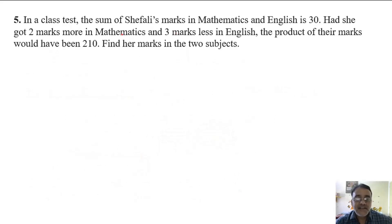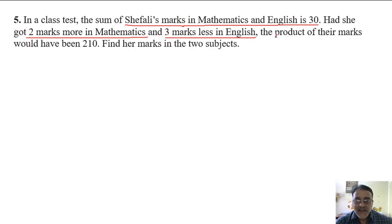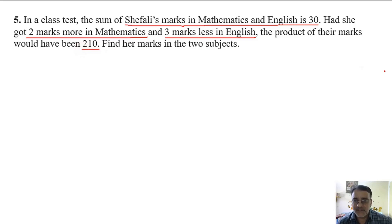In a class test, the sum of Shefali's marks in maths and English is 30. Had she got two marks more in mathematics and three marks less in English, the product of their marks would have been 210. Find her marks in the two subjects.